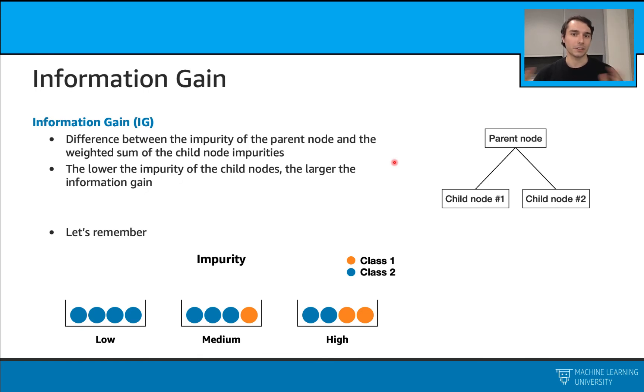Okay, it's nice. We learned how to calculate these impurities. So let's talk about one more concept: information gain. Information gain is important because when we are selecting our split conditions, we can use information gain. And this is actually a really simple concept once we know how to calculate our impurities.